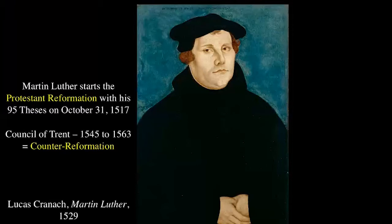Many of the dominant European states at this time are Catholic—primarily think Spain, which is at its height in the 1500s and has a lot of control. The Peace of Augsburg in 1555 finally decides that the religion of the ruler determines the religion of the area. For us, this means dividing the Baroque into two areas: the Italian Baroque, associated with the Counter-Reformation, and the Northern Baroque, primarily associated with the Protestant Reformation—though pockets of Catholicism remain in the North, largely because of Spain.